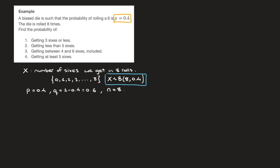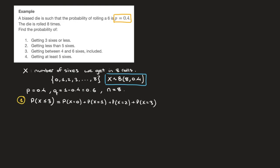Let's answer question one. We need to find the probability of getting three sixes or less — in other words, the probability that X be less than or equal to 3. This can happen if we get 0, 1, 2, or 3 sixes. So this probability equals P(X=0) + P(X=1) + P(X=2) + P(X=3). We now have four probabilities to calculate.